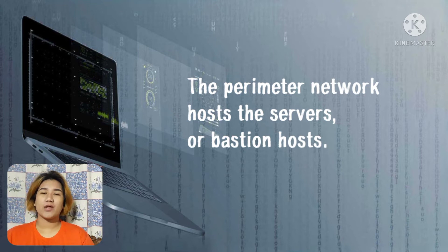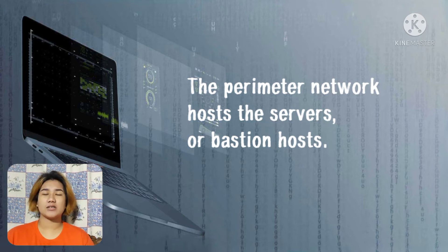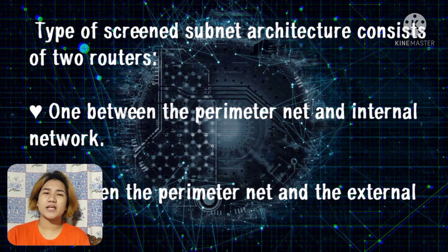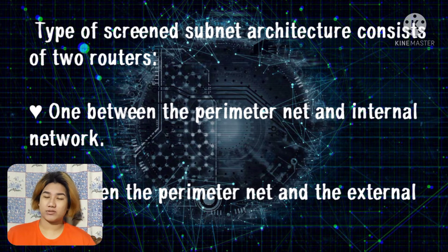The perimeter network hosts the servers or bastion hosts, which can be accessed and have access to both internal and external networks. This network is also known as the DMZ or border network. The simplest type of screened subnet architecture consists of two routers.